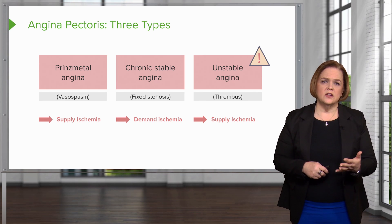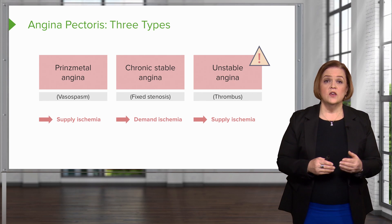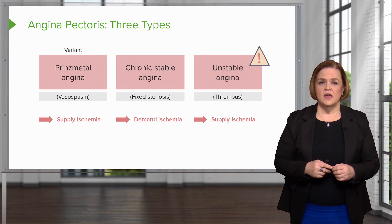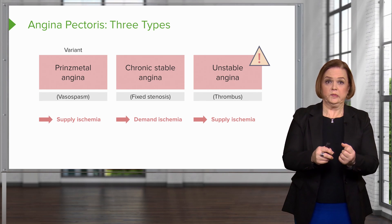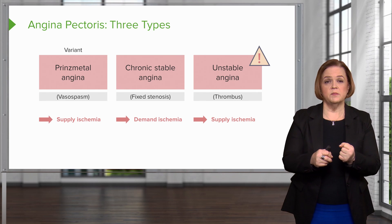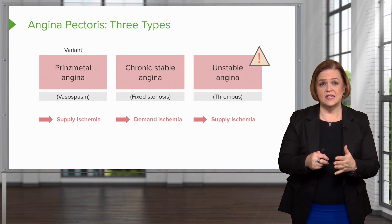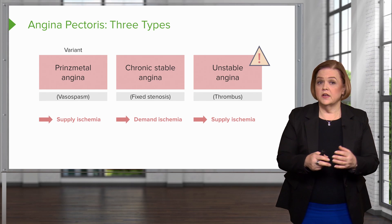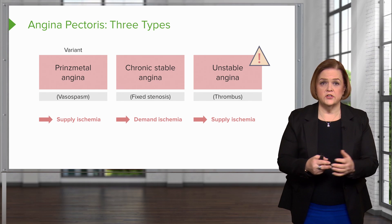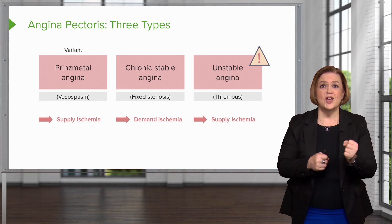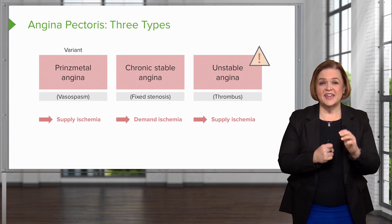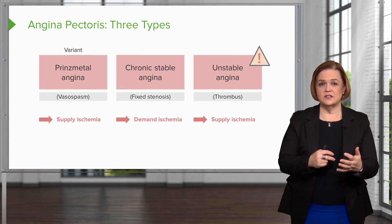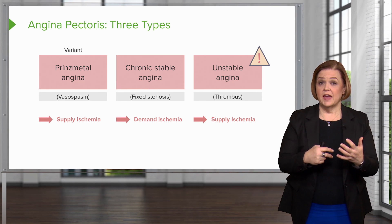First, you've got Prinzmetal's angina, also known as variant angina — write the word 'variant' above that first red box. These are caused by vasospasms where the vessels literally spasm and clamp down, which is why it's a supply ischemia. Supply means we're having a supply issue — not enough blood is getting to the heart tissue. Ischemia means there's still hope; if we intervene quickly enough, we can restore blood supply and keep healthy heart tissue.